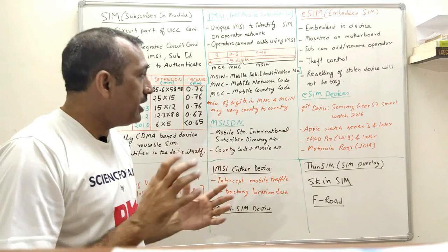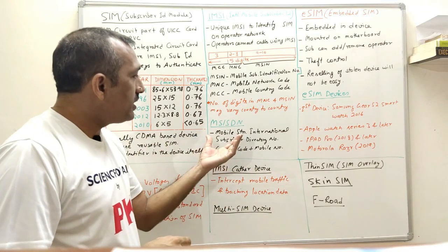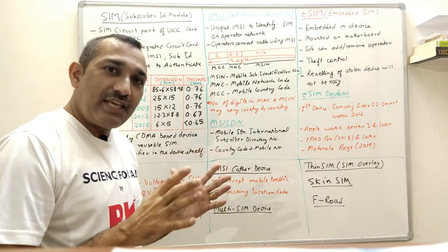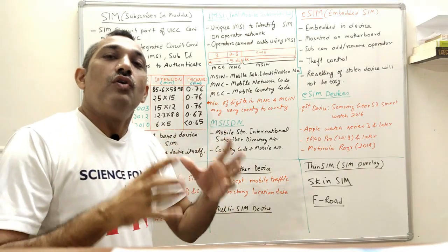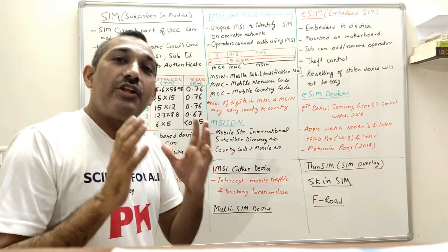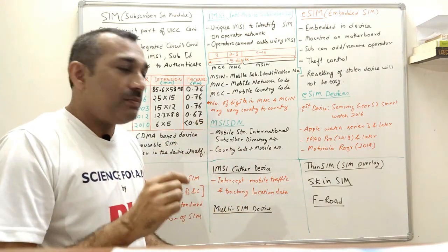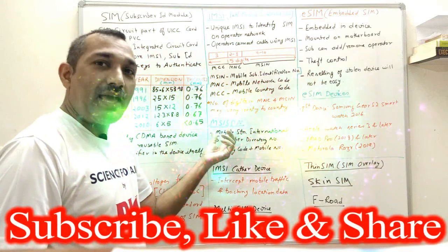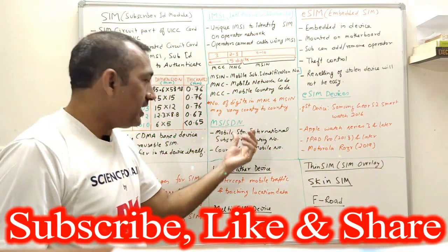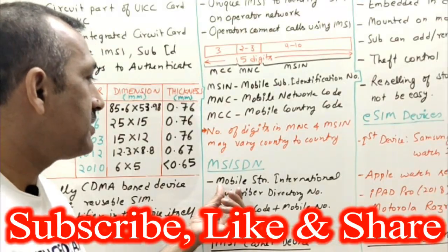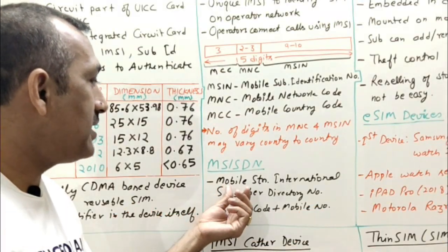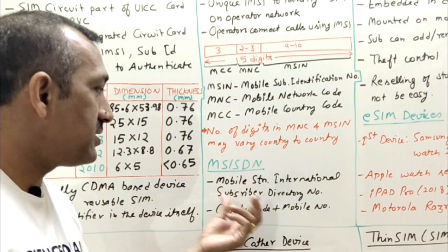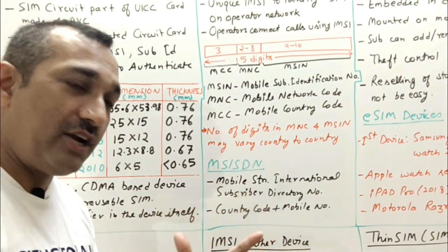What is an MSISDN number? This is simply your phone number including the country code — country code plus your mobile number equals your MSISDN. The full form of MSISDN is Mobile Station International Subscriber Directory Number.